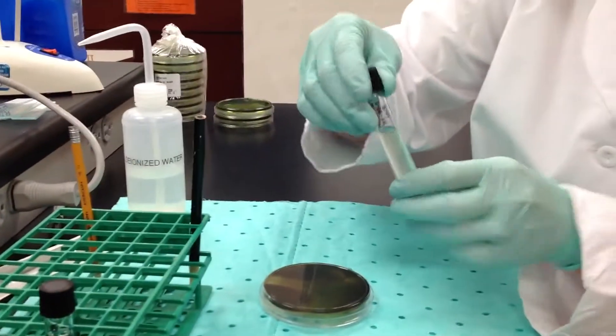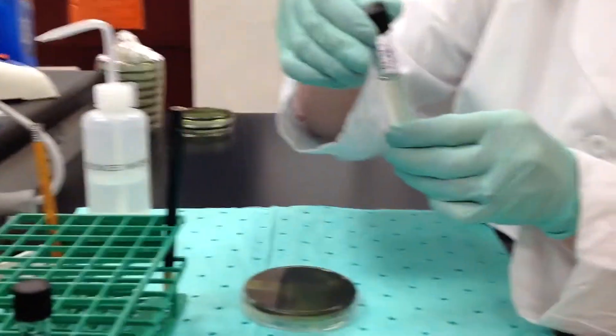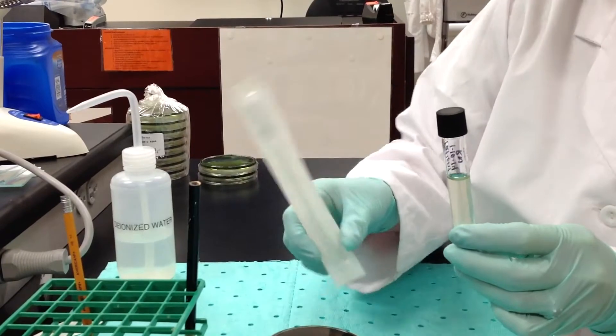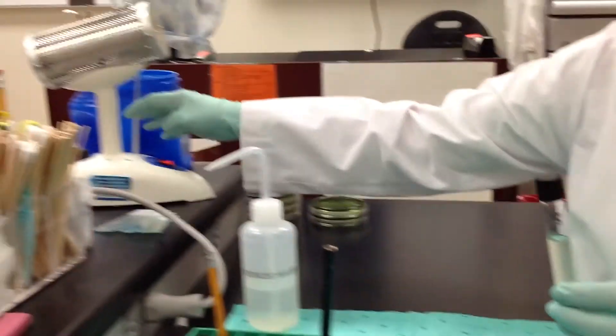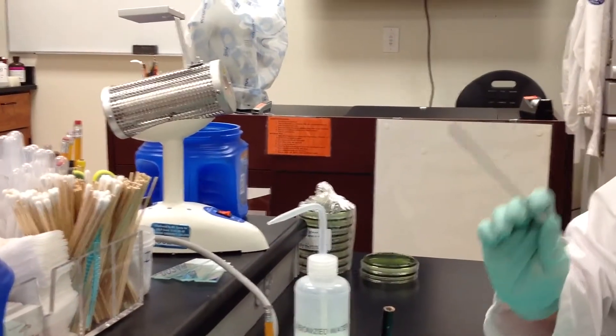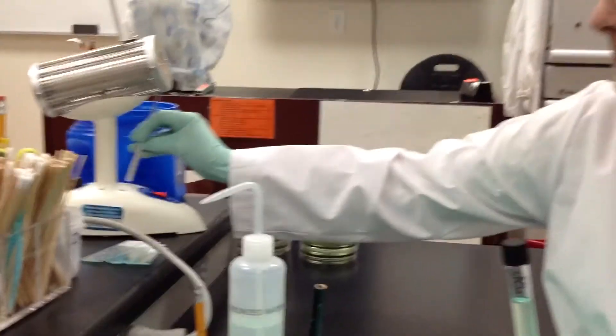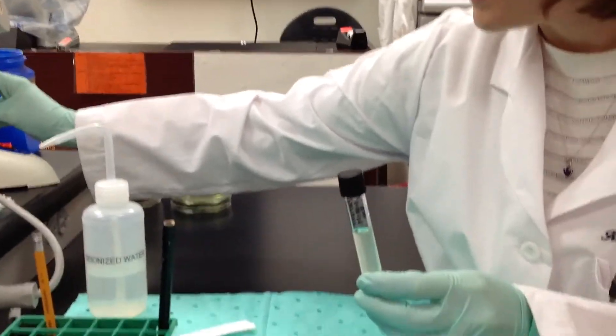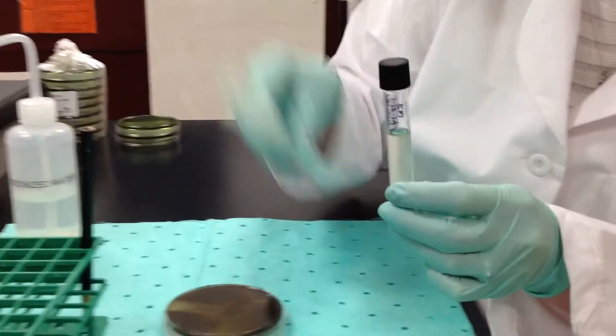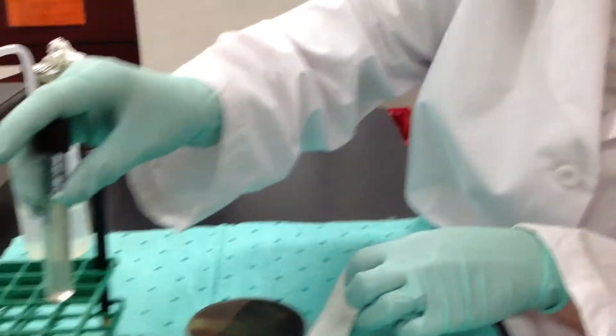So to make a smear from a liquid culture you can either use a drop from a pipette or you could actually use two loopfuls made from your loop. For today I'm going to use a sterile pipette using my aseptic technique.